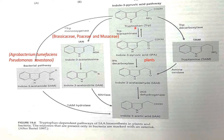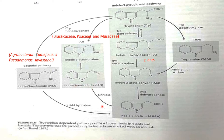In the case of Brassica and Musaceae, tryptophan is converted into indole-3-acetaldoxime, which is then converted into indole-3-acetaldehyde nitrile. With the help of the enzyme nitrilase, indole-3-acetaldehyde nitrile is converted into indole-3-acetic acid. This pathway is called the IAN pathway because the first intermediate produced from tryptophan is indole-3-acetaldoxime, and this pathway is seen in Brassica and Musaceae.